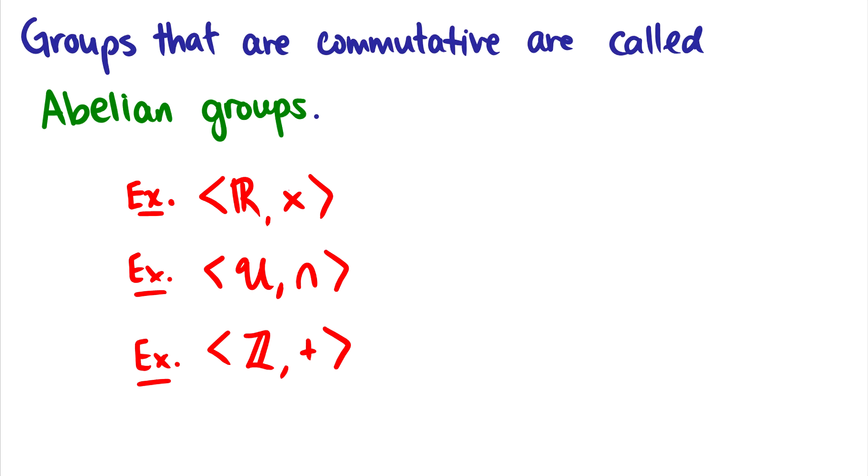Okay, so groups that are commutative are called abelian groups. I just went over this. But some groups that you may want to verify yourself that are, in fact, groups are the real numbers and multiplication. So we know that 3×2 = 2×3. It also satisfies other group properties. So for instance, if you take a real number and multiply it with another real number, you'll always get a real number back. Another example would be the universe of sets and intersection. So A∩B = B∩A. In fact, I really advise you to check all of these and check if they're groups.